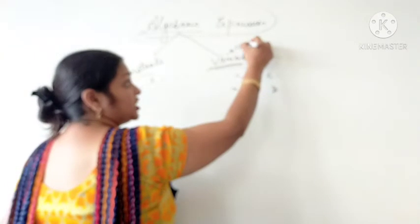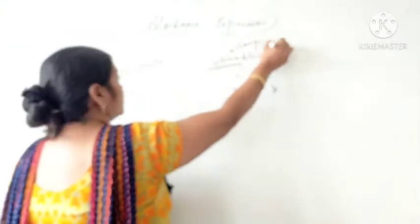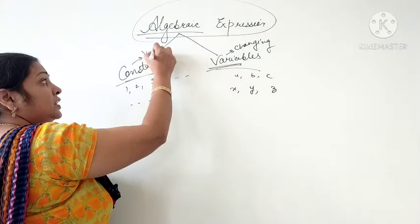Very, very means keep on changing. Constants are fixed. They never change.